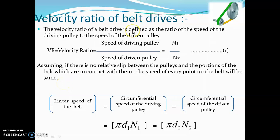Now, the next point is the velocity ratio of the belt drive. The velocity ratio of the belt drive is defined as the ratio of speed of the driving pulley to the speed of the driven pulley.